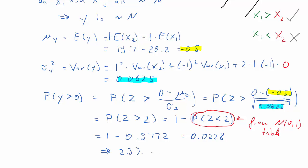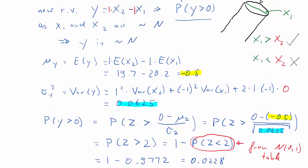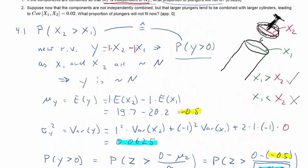So that means there's about a 2.3% probability that a particular syringe that's collected in the way described is unusable, because the plunger is larger than the cylinder.